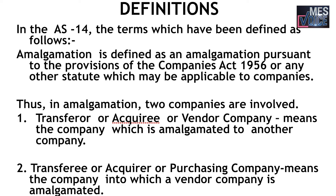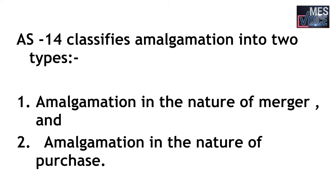The transferor company is the company which is amalgamated into another company. The transferee company is the company into which the vendor company is amalgamated. There are two types of amalgamation: first, amalgamation in the nature of merger, and second, amalgamation in the nature of purchase.